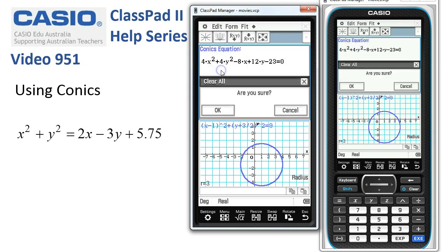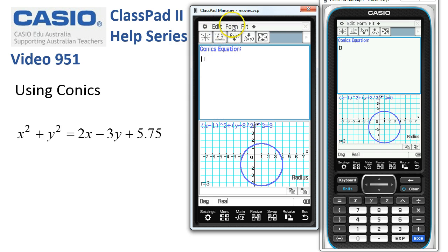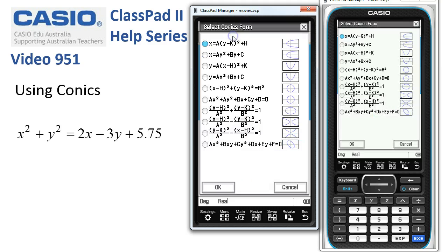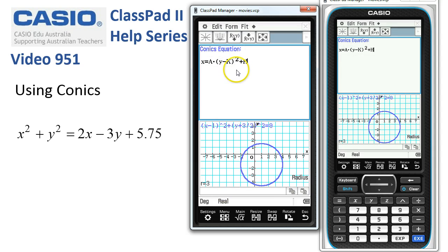Now if instead, let's just clear that out here, and I'm going to choose a different Conics form. Maybe let's take the very top one that's selected here. So it's a relation.